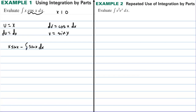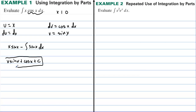Now we take the antiderivative of sine of x. We have x·sine(x), and the antiderivative of sine(x) is negative cosine, so we get plus cosine(x), plus C. This is our answer.